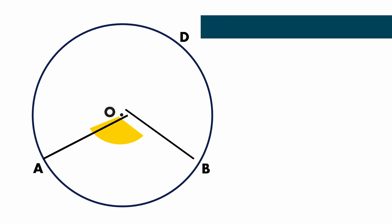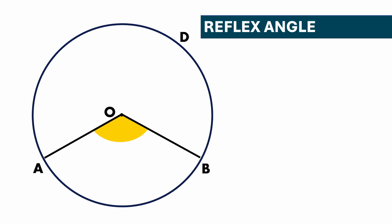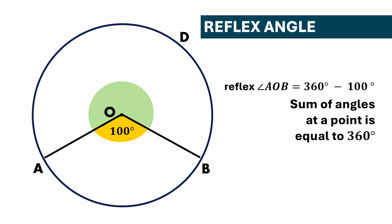Next property: reflex angle. In this case, angle AOB is equal to 100 degrees and we need to find the reflex angle AOB. The reflex angle AOB will be equal to 360 minus 100 degrees, because the sum of angles at a point is equal to 360 degrees. Therefore the reflex angle AOB equals 260 degrees.